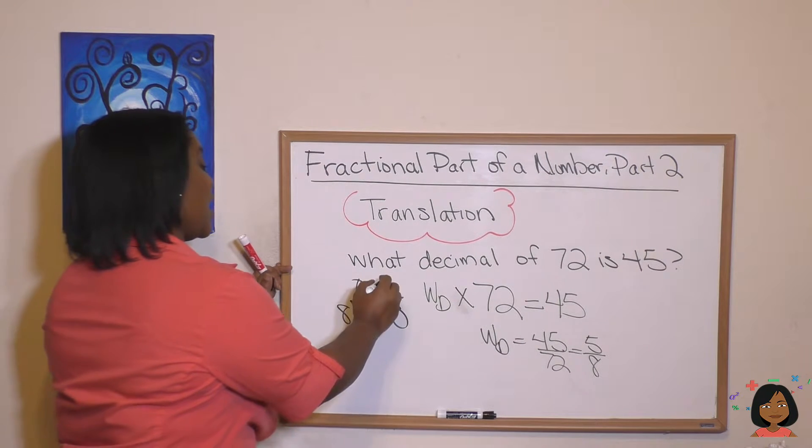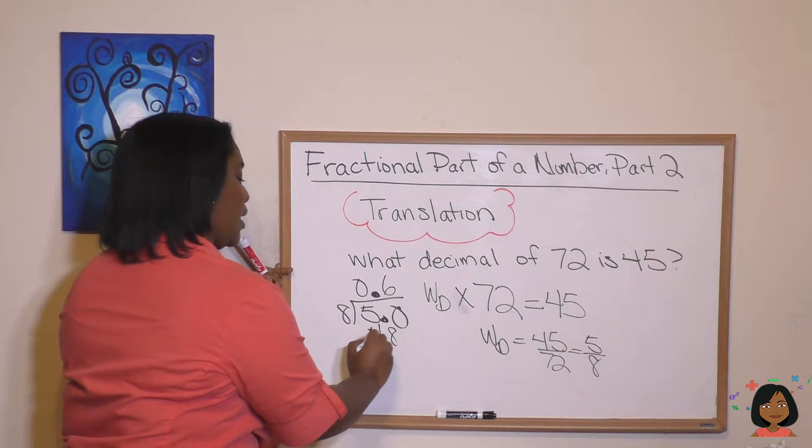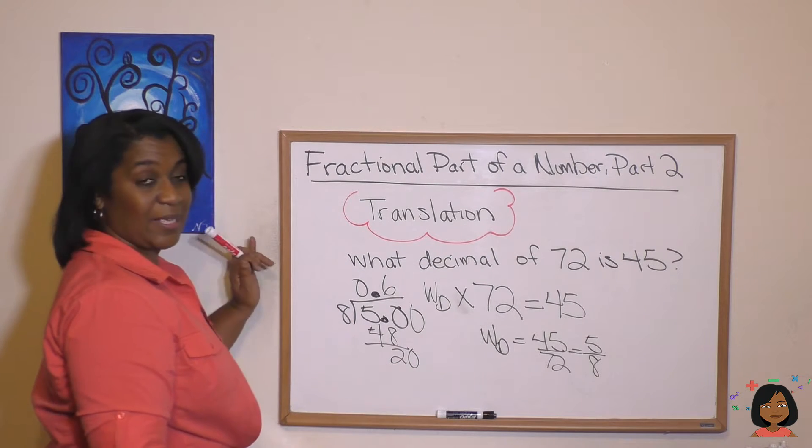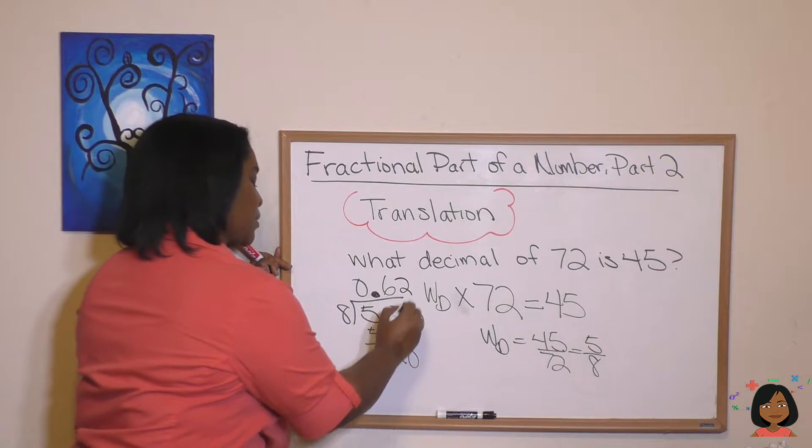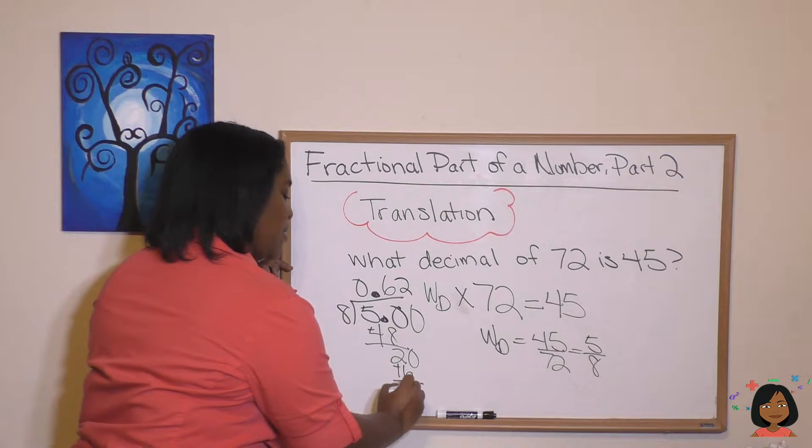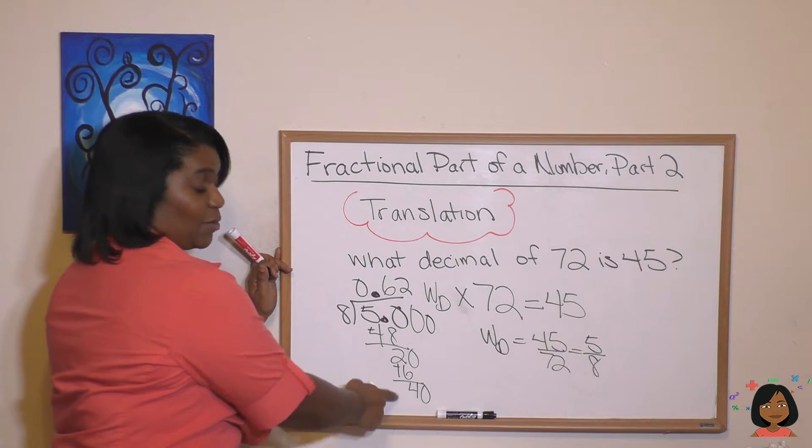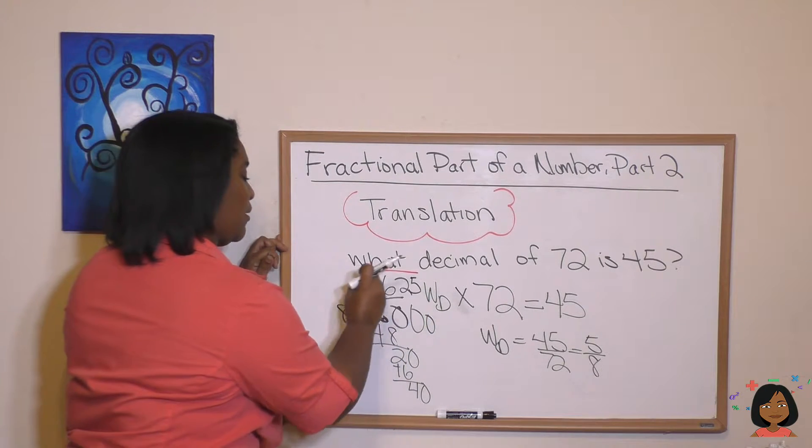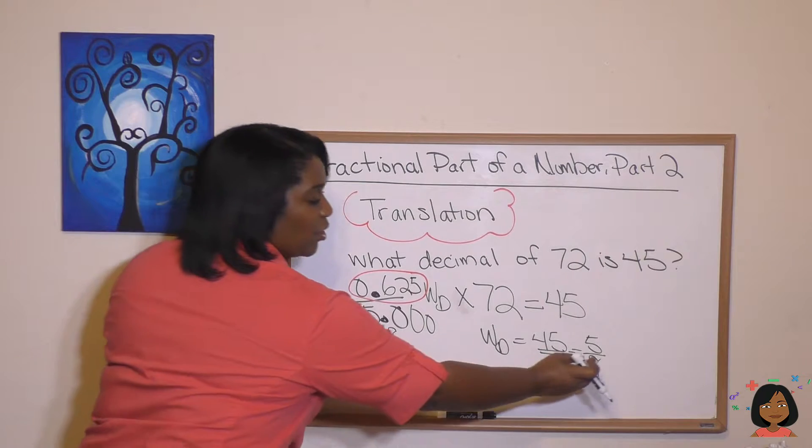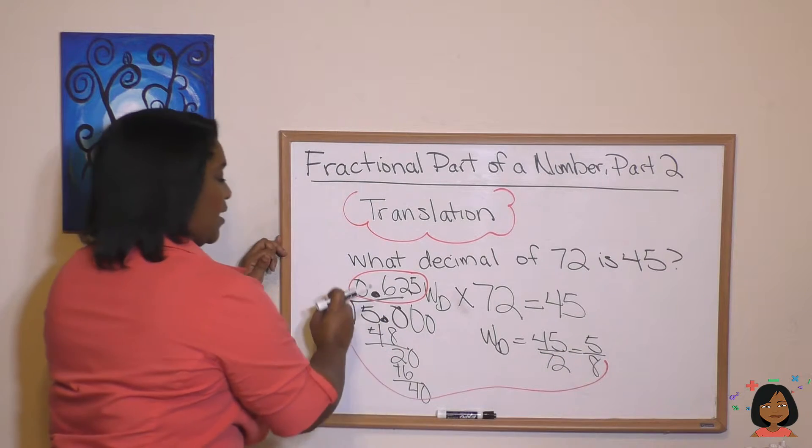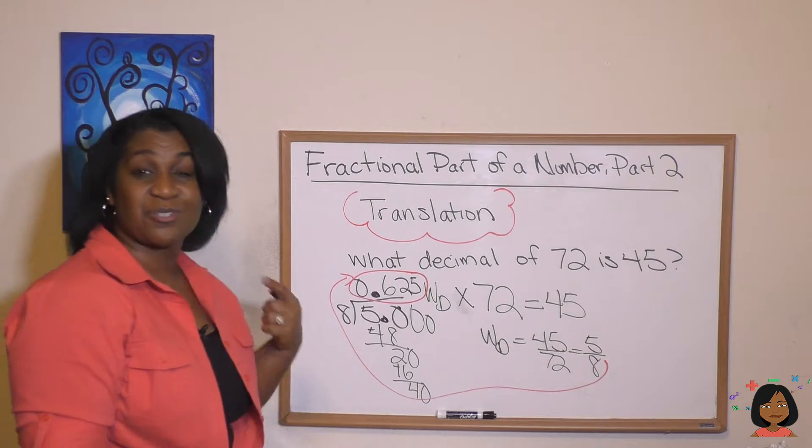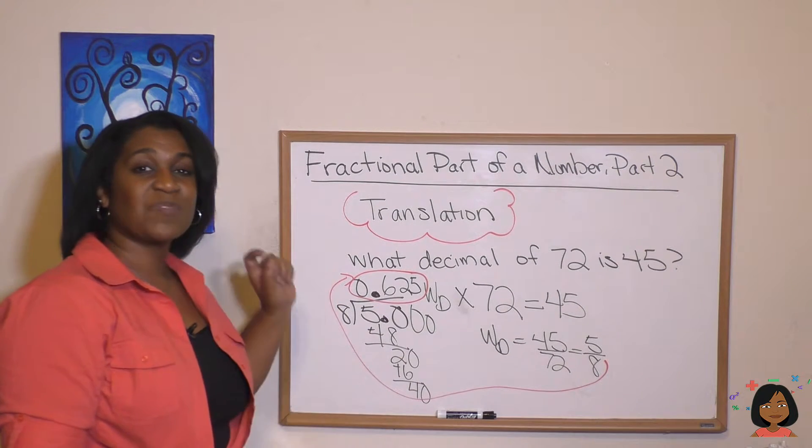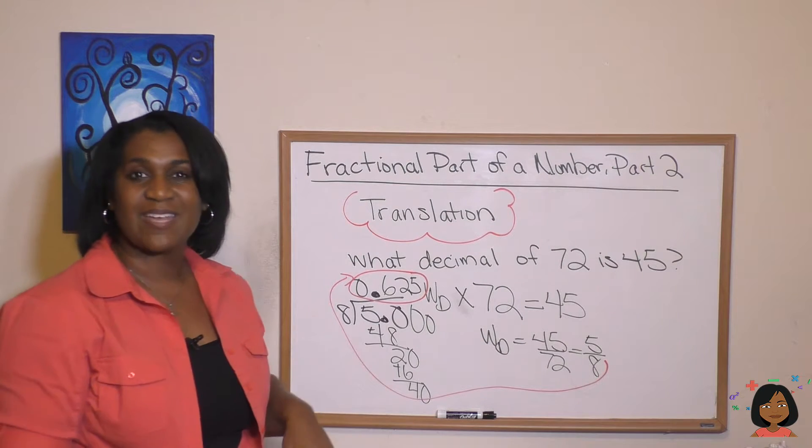Eight can't go into five, but it can go into 50. Eight times six is 48. Two is left over, and I bring my zero down. Eight goes into 20 two times, which is 16. Four is left over. I add a zero. Eight goes into 40 five times. So here we turned our five eighths into a decimal. So that's how you do it. You still go ahead and find your fraction, but then you turn your fraction into a decimal. 0.625 is our answer.